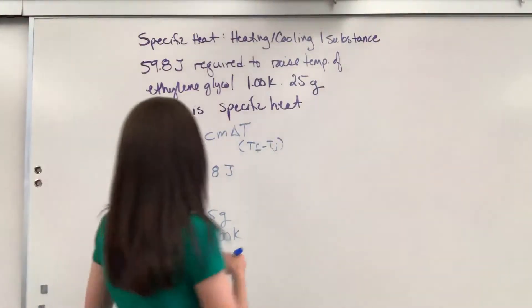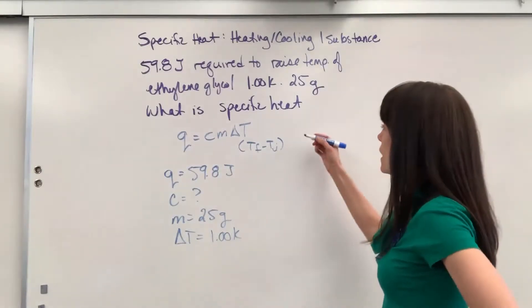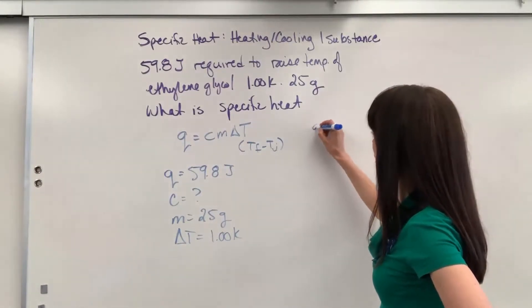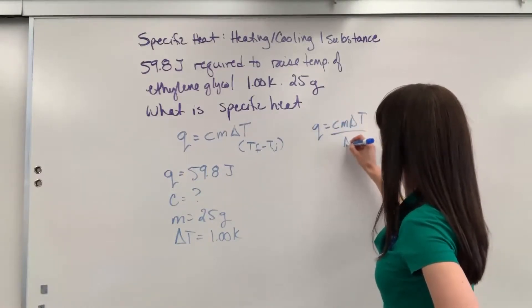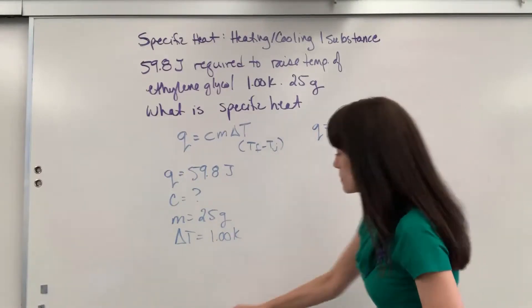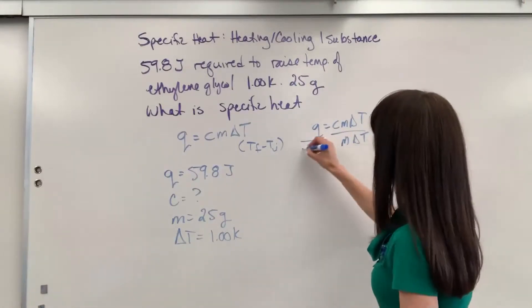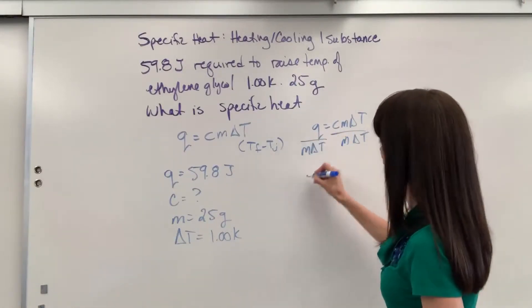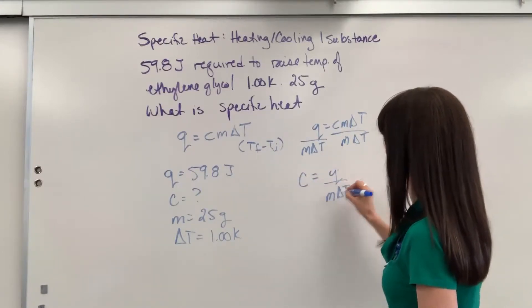Let's go ahead and plug this in. So I see my formula and we're going to solve for the C. If we divide both sides by the M delta T, we'll get that the specific heat equals Q divided by M delta T.